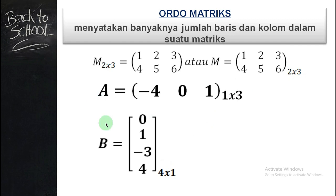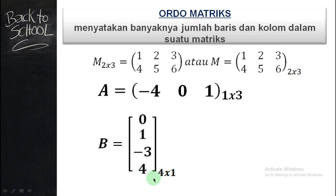Berbeda dengan matriks B. Saya sengaja, karena biasanya dari tahun ke tahun banyak yang belum bisa membedakan, perhatikan. Untuk matriks B, baris pertama 0 — ingat, baris ini mendatar, tidak ada temannya. Baris kedua 1. Baris ketiga min 3, baris keempat 4. Jadi ada empat baris. Kolom yang pertama perhatikan hanya ada satu kolom ke bawah: 0, 1, min 3, empat. Hanya ada satu kolom, maka ordo matriksnya adalah 4 kali 1.